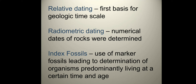Here are some of the mechanisms used in the geologic time scale. First is relative dating, the first basis for the geologic time scale. In relative dating, it cannot provide actual numerical dates of rocks. It only tells that one rock is older than the other but does not tell how old each rock is. Second is radiometric dating. Numerical dates of rocks are determined through radiometric dating. It is a method used to determine the age of rocks by measuring its radioactive decay.